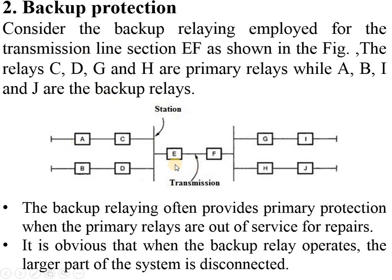Here we can see EF is the line to be protected, and A, C, B, D, G, I, H are the backup relays. The backup relaying often provides primary protection when the primary relays are out of service for repairs. It is obvious that when the backup relay operates, the larger part of the system is disconnected.